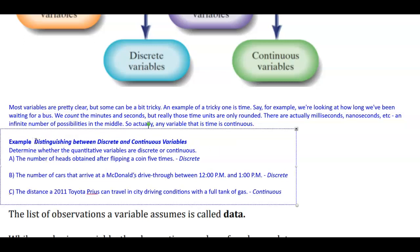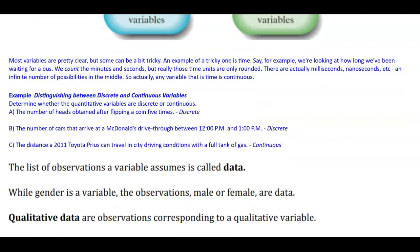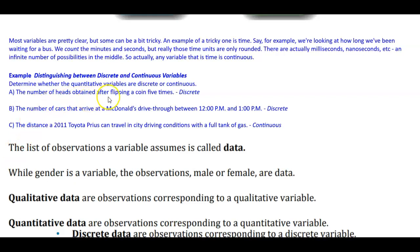Distinguishing between discrete and continuous variables: the number of heads obtained after flipping a coin five times is discrete. The number of cars that arrive at a McDonald's drive-thru between 12 p.m. and 1 p.m. is discrete because you can count how many cars drove through. The distance a 2011 Toyota Prius can travel in city driving conditions with a full tank of gas is continuous because you can't count all the numbers in between — it is an interval.